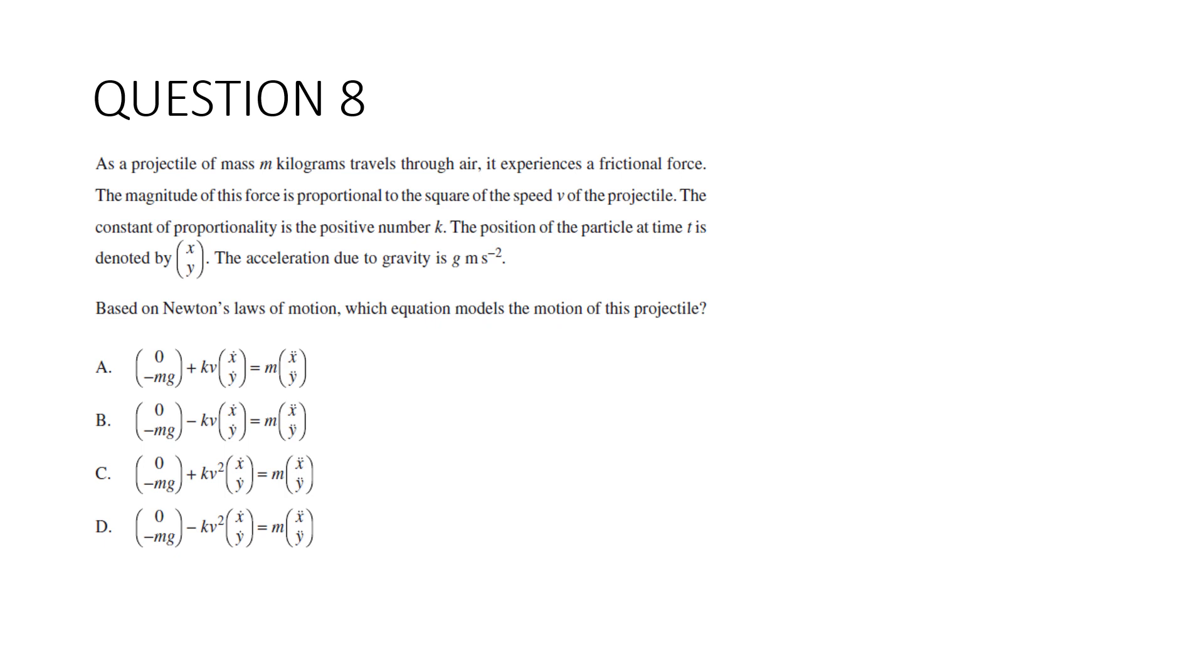Question 8. As a projectile of mass m kilograms travels through the air, it experiences a frictional force. The magnitude of this force is proportional to the square of the speed v of the projectile. Constant of proportionality is the positive number k. Position of the particle at time t is denoted by the vector (x, y). Acceleration due to gravity is g meters per second squared. Based on Newton's laws of motion, which equation models the motion of this projectile?